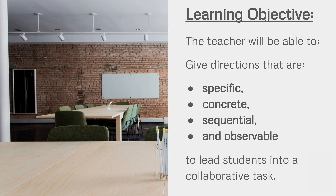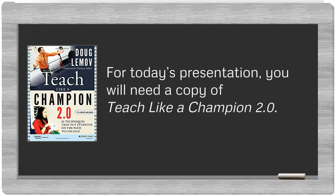To have an effective transition, we'll need to know how to give effective directions. In this course, you'll learn how to tell students what to do by giving instructions that are specific, concrete, sequential, and observable. Teach Like a Champion 2.0 has a great technique for giving effective directions. You'll want to have your book handy when we read about it later on in the video.